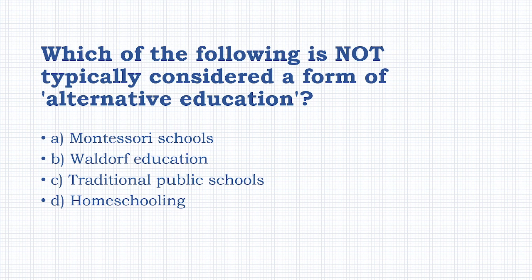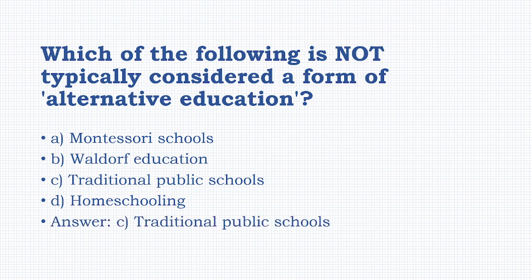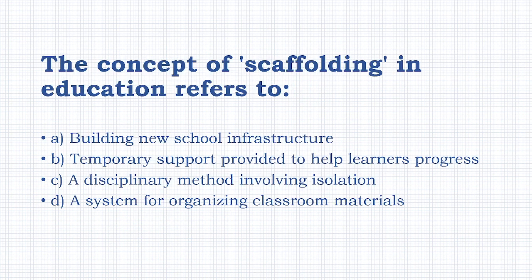Which of the following is not typically considered a form of alternative education? Options: Montessori School, Waldorf Education, Traditional Public School, Homeschooling. The answer is option C: traditional public school.